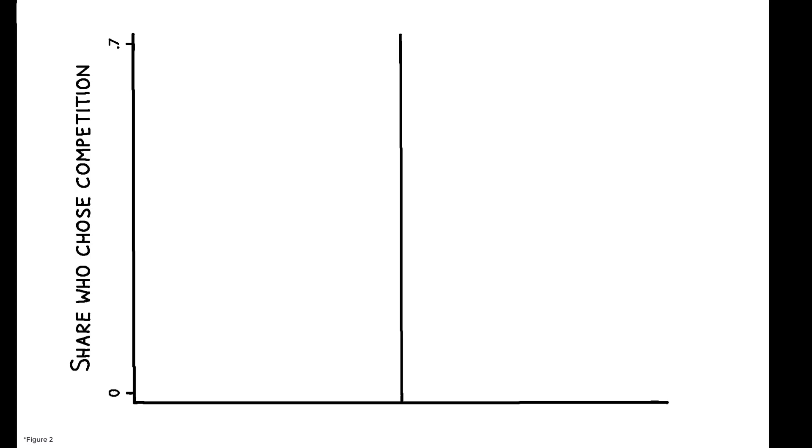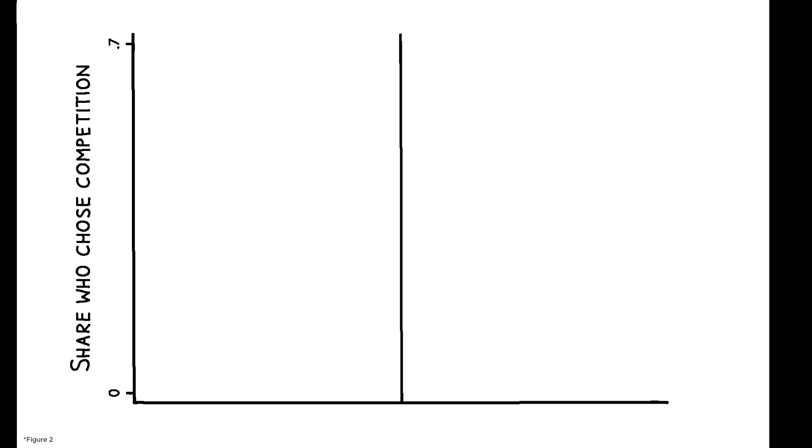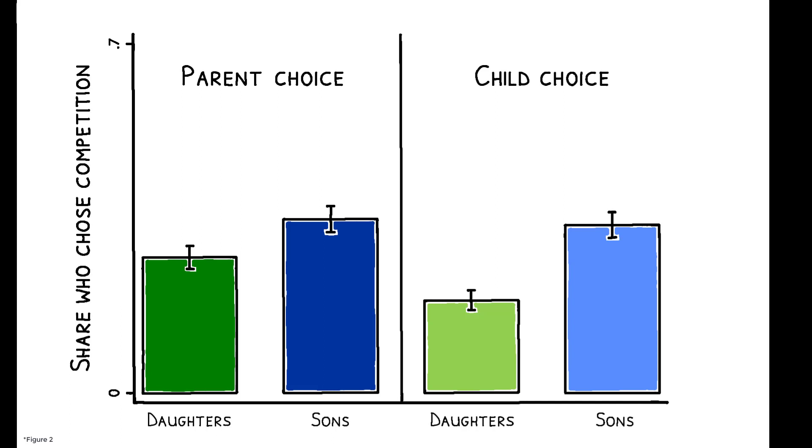So, what do the results show? Consistent with previous research, there is a large and significant gender difference when children make their own choice. 34% of boys choose to compete, while only 19% of girls do, and a similar pattern emerges when parents make the choice for their children.